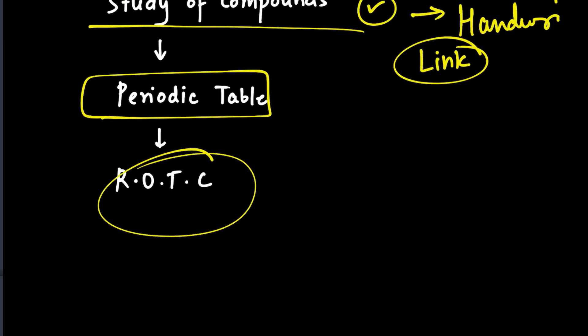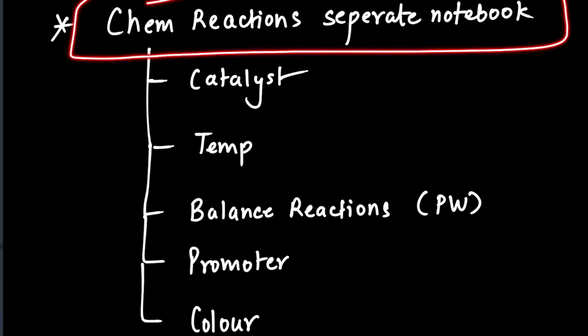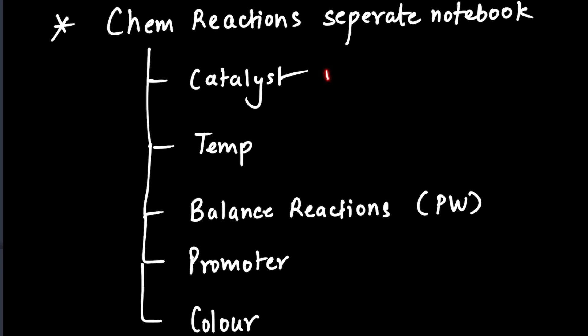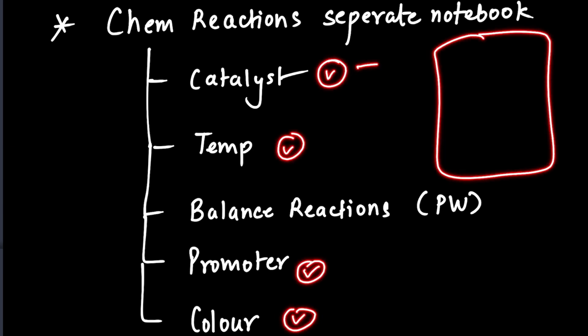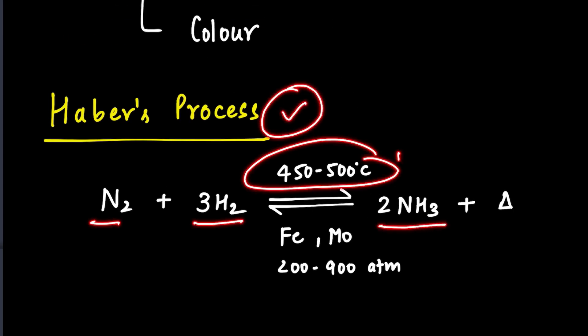Then you can tackle rest of the chapters. I highly recommend you to make chemistry reaction separate notebook since they will ask you the catalyst, temperature, promoter and the color. Learn all of them. Make a separate notebook. Write Haber's process. See this is Haber's process, mention the reactants, the products and then the temperature, the catalyst, promoter and the pressure involved.